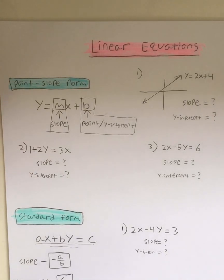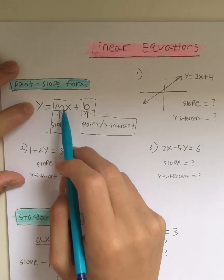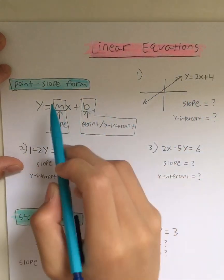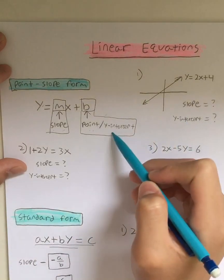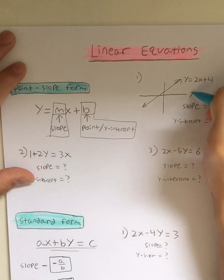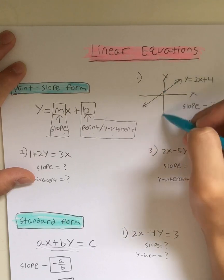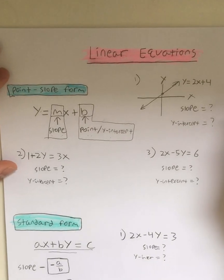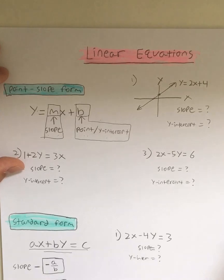So you guys know the x and y values. In point-slope form, you have y is equal to mx plus b. Why is this called point-slope form? Because m represents the slope, and b represents the point, which is also known as the y-intercept. The y-intercept is where the line touches the y-axis. And the x-intercept is where it touches the x-axis.